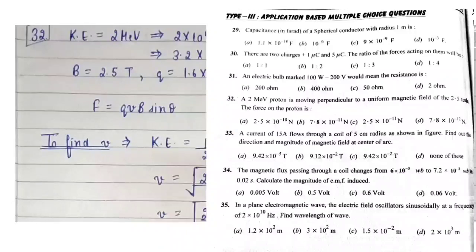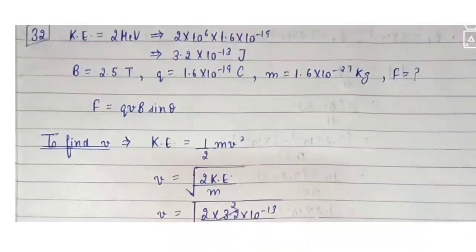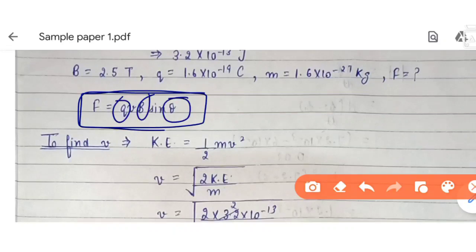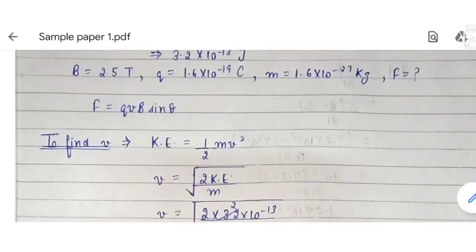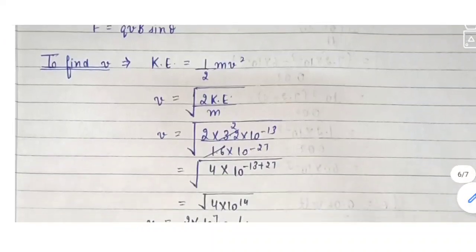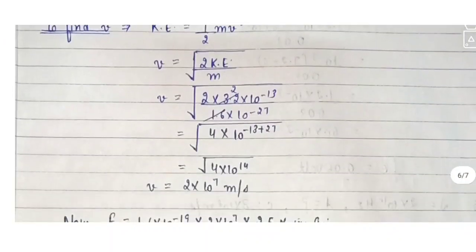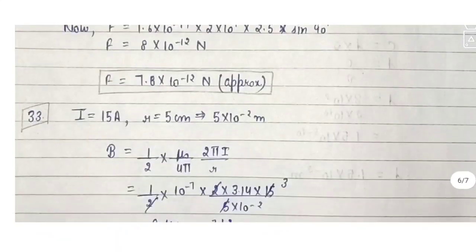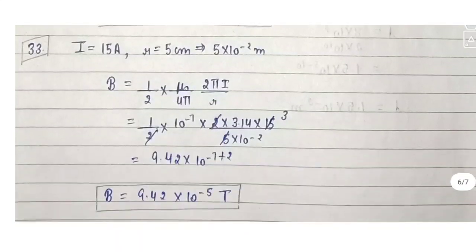Question 32: a proton moving at 2 MeV is moving perpendicular to a uniform magnetic field — find the force. Use F = QVB sinθ. Q, B, and θ are given. Since kinetic energy is given instead of velocity, first find velocity from KE = ½mv², then substitute the velocity into the force formula to get the approximate answer.